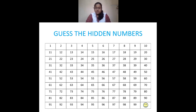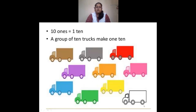After 99, what comes next? 99 is a two-digit number — it is called the greatest two-digit number. When I add 1 to 99, I get 100. 100 is a three-digit number and it is called the smallest three-digit number. Then we saw that ten ones make one ten.